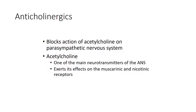Anticholinergics block the action of acetylcholine on the parasympathetic nervous system. Acetylcholine is a very important neurotransmitter that exerts its effects on the muscarinic and nicotinic receptors. The muscarinic receptors are located in most of your internal organs such as your heart, your lungs, the GI tract, and the GU tract. When activated by acetylcholine, the affected cells may either be excited or they may inhibit in their function.